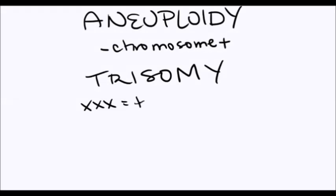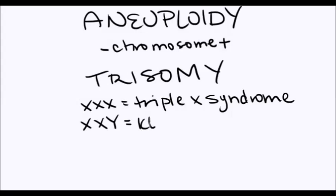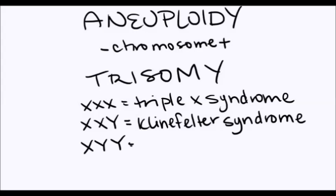In the case of trisomy, a female can have three X chromosomes and a male two X chromosomes and one Y chromosome, or two Y chromosomes and one X chromosome.